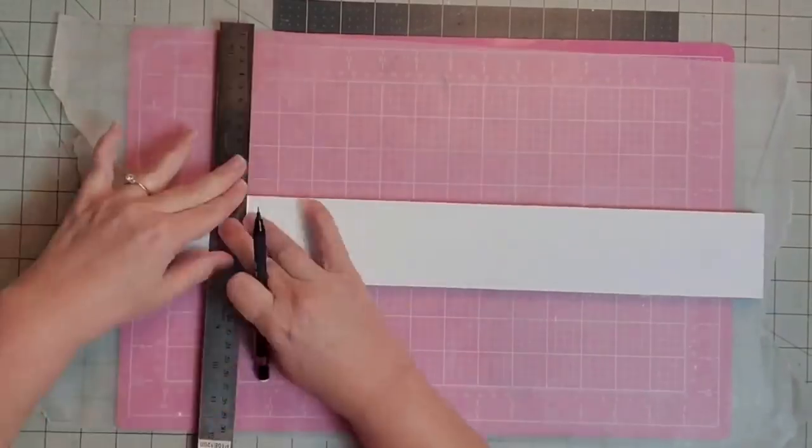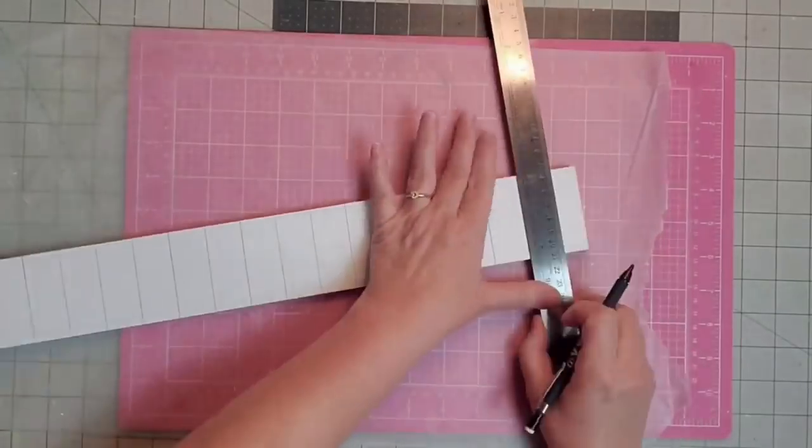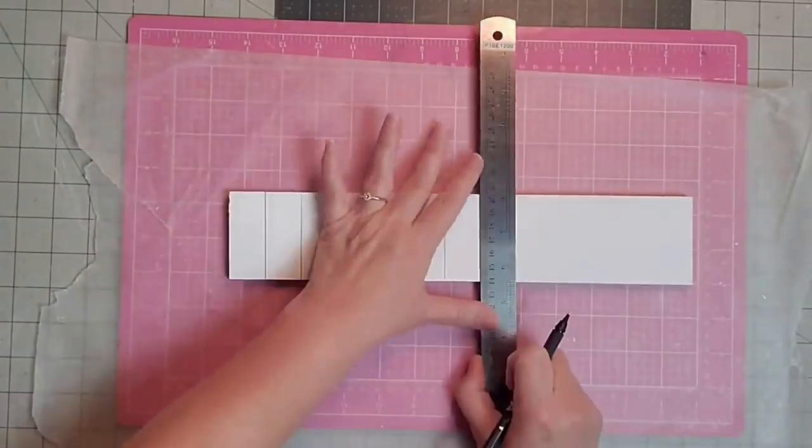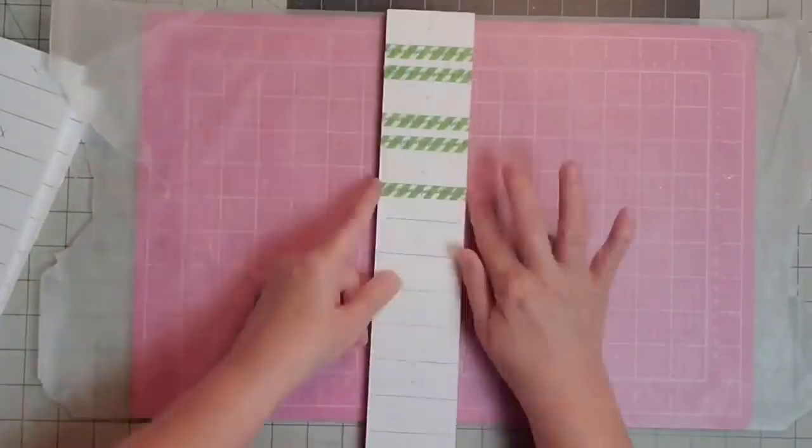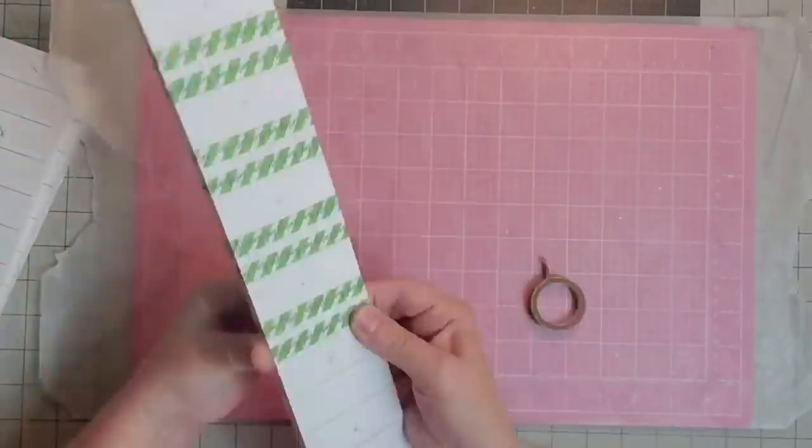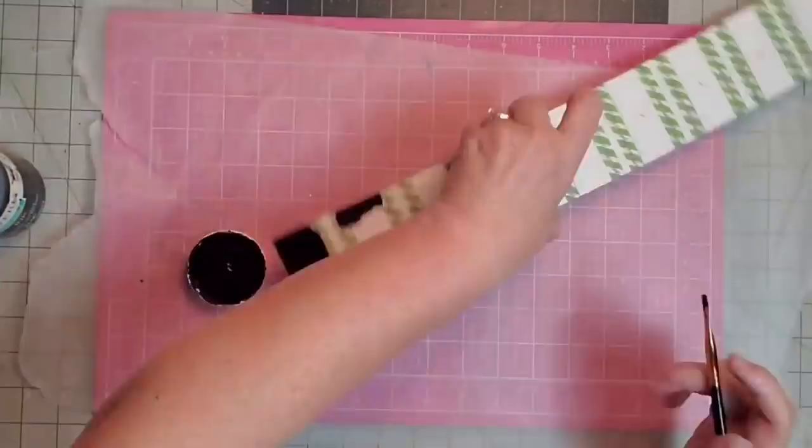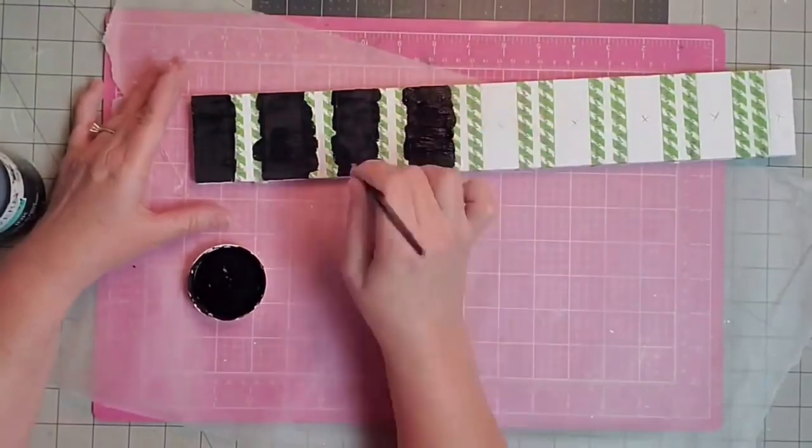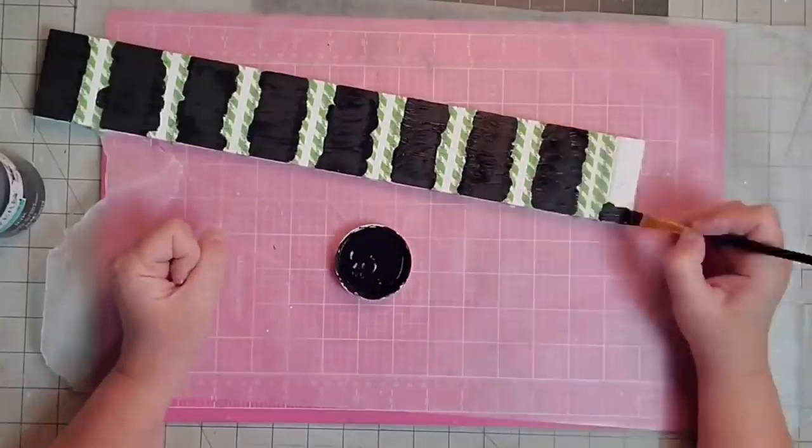Then I took my white pieces once they had dried and I drew lines that were one inch apart all the way across all four pieces. Then I used some washi tape and I outlined all of my lines on my pieces so that I could more easily paint them with the black chalk paint. That's what I did. I came in and painted every other stripe with black chalk paint.